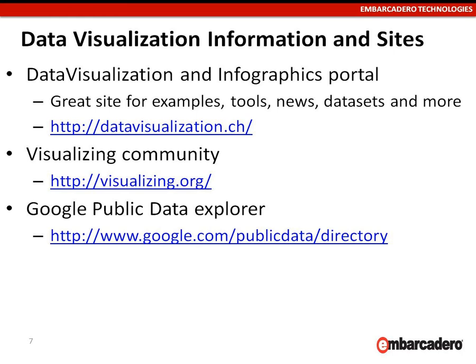Google has a similar thing — they call it the Google Public Data Explorer. You can go there and look at a 2D graphic example of relating two different data sets to each other and see visually how they're related — maybe it's GDP and education level, for example.